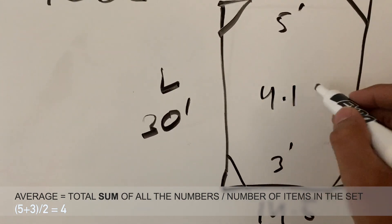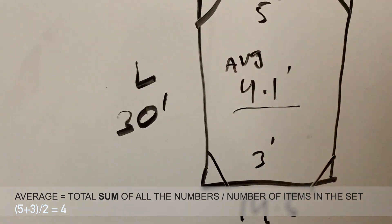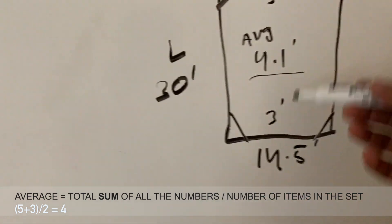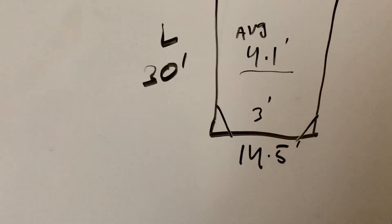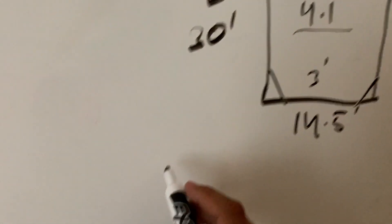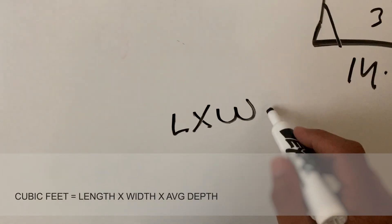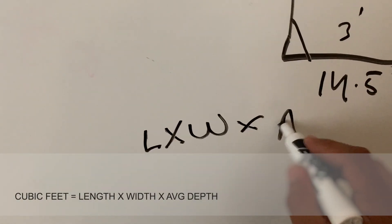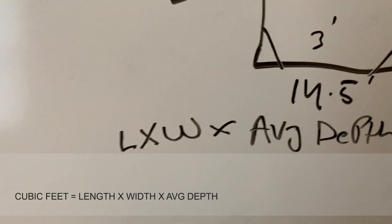So, the formula for that is: you're gonna do length times width times your average depth. This is the formula.